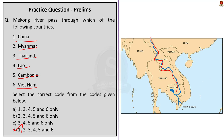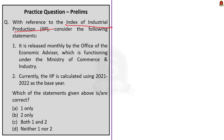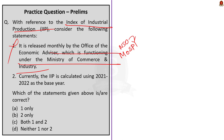The third question is about the Index of Industrial Production. Statement one says it is released monthly by the Office of Economic Advisor under the Ministry of Commerce and Industry — this is incorrect. It is published by NSO, National Statistics Office, under the Ministry of Statistics and Programme Implementation. The index of eight core industries is published by the Office of Economic Advisor. Statement two says the IIP is currently calculated using 2021–22 as the base year — this is also incorrect, as the base year is 2011–12. The correct answer is option D — neither one nor two.